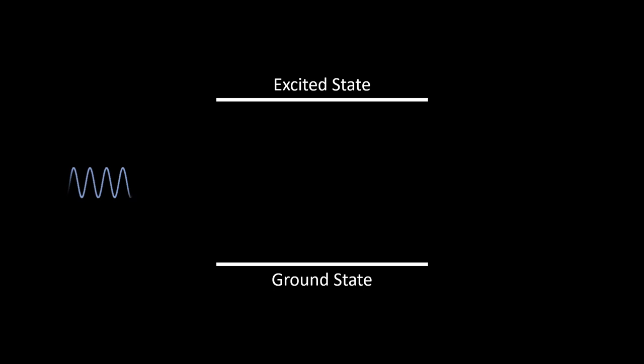In this simplified Jablonski diagram, we can see that a high energy photon comes in and excites a molecule to a higher energy state. After a short period of time, the molecule relaxes to its ground state, emitting light of a lower energy or longer wavelength. The wavelength emitted is almost always longer as some of the excitation energy is dissipated as heat.